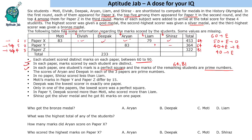The scores of Aryan and Deepak in each of the 3 papers are prime numbers, meaning both appear in all 3 papers. In no paper did Shiraz score less than Liam, so Shiraz always scores more than Liam — though this doesn't guarantee both appear in all papers; one may get eliminated. Also, Moti's marks in paper Y and Z differ by 15.